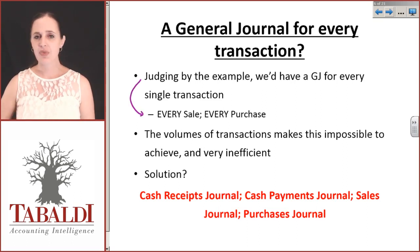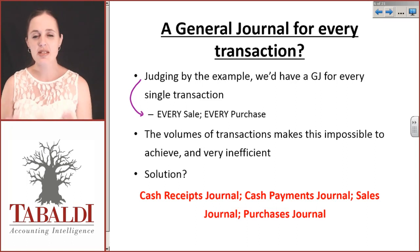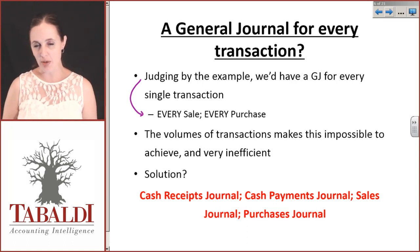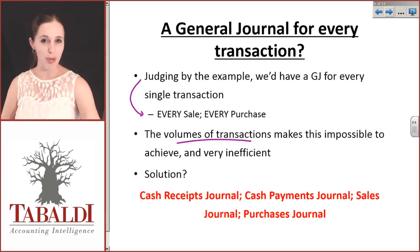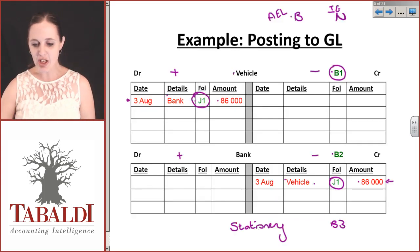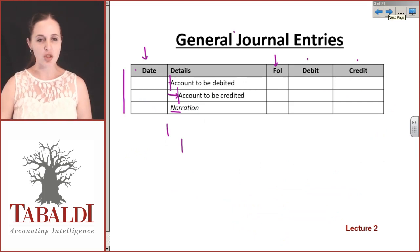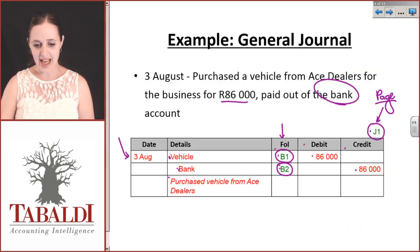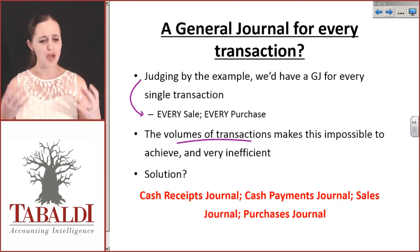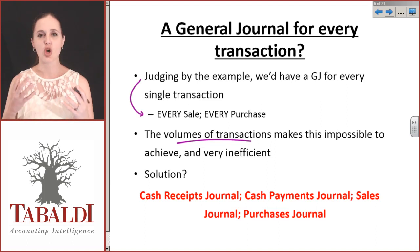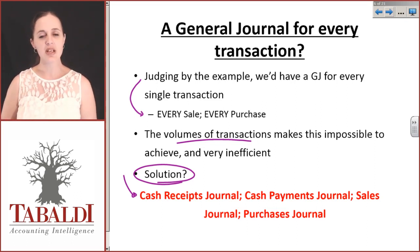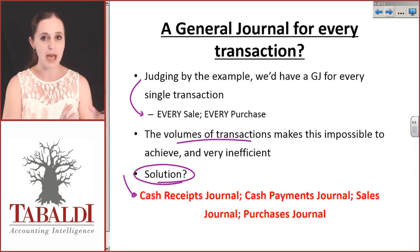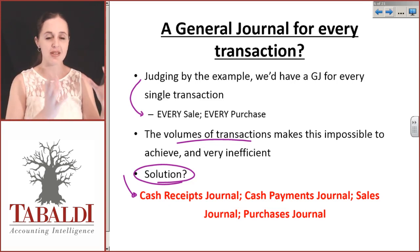Judging by this, every sale, every single purchase, every single thing that the company does could be brought in through a general journal. And if that is the case, can you imagine the volume of transactions? If you have an A4 page and you have these general journals on them, how many could you fit in? And if you had to do this for every single sale, can you imagine the amount of paper we create? There's got to be a better way to do this. The solution is to create specific subsidiary journals for transactions that are always happening or regularly happening to the same place in the same way.